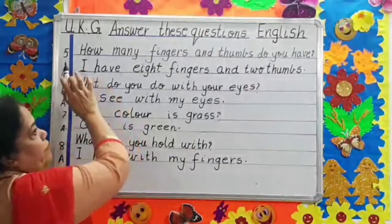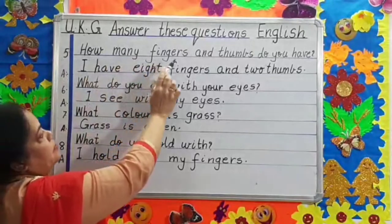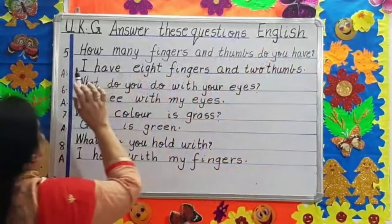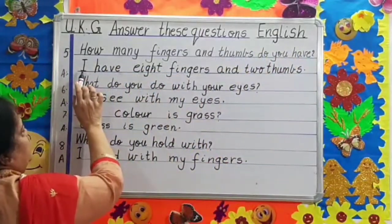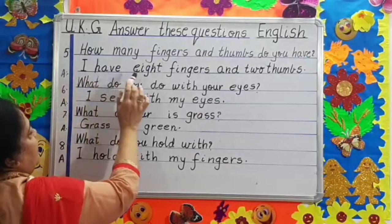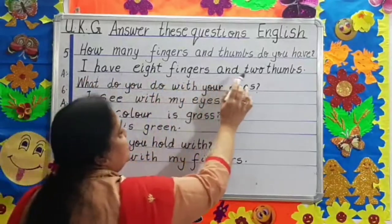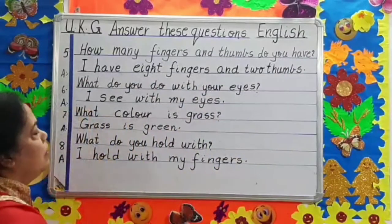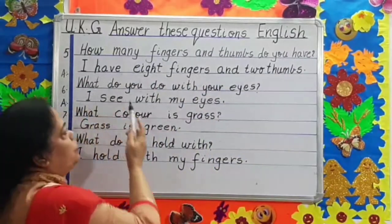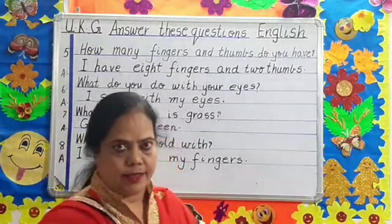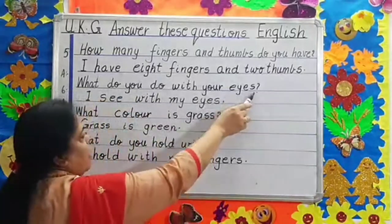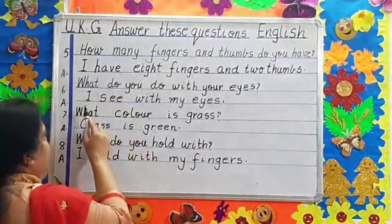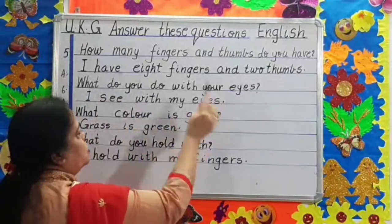Question number five. How many fingers and thumbs do you have? Question mark. Answer. I — capital, first letter — I have eight fingers and two thumbs. Full stop. Question number six. What do you do with your eyes? Question mark. I see with my eyes. Full stop.